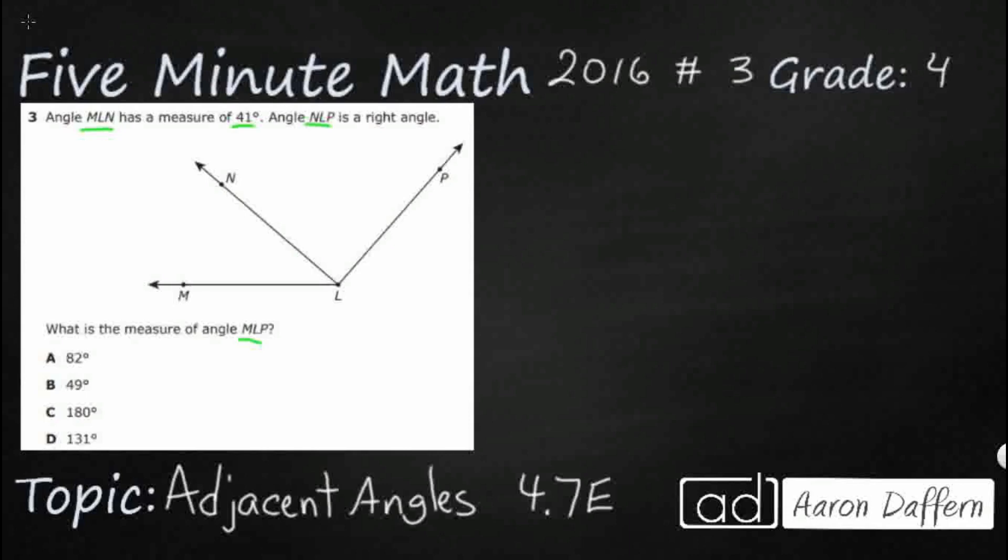Now, that's a lot of letters here. Let's make sure we understand what each of these means. So, this first one is angle MLN, and that is going to equal 41 degrees. So, if we look at MLN, we can trace it with our central letter right there, L.